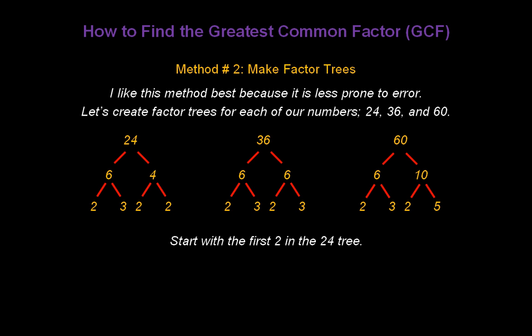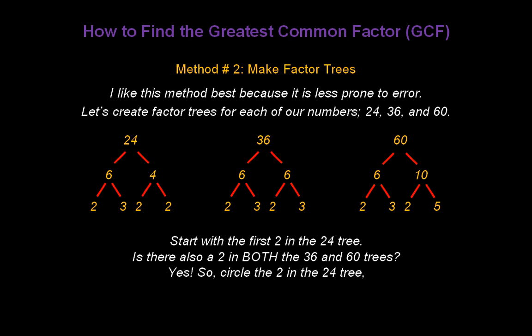Start with the first 2 in the 24 tree. Is there also a 2 in both the 36 and the 60 trees? In fact, there is. So circle the 2 in the 24 tree, and cross out one 2 in each of the other trees.